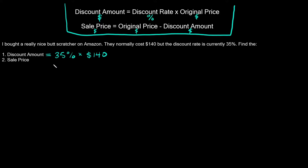To turn a percent to a decimal, ignore the percent sign and move the decimal two places to the left. So 35% becomes 0.35.